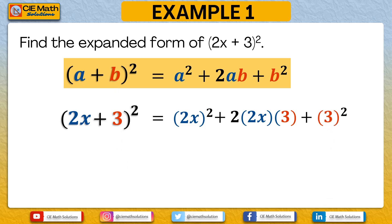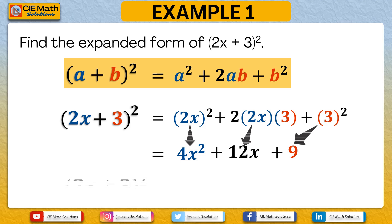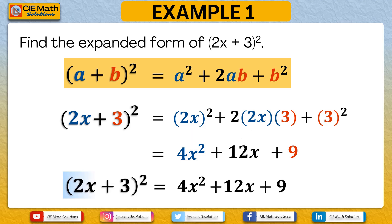Now let us simplify each term. Using the multiplication law of indices, 2x raised to 2 equals 4x squared. The second term, 2 times 2x times 3: 2 times 2x is 4x, times 3 gives us 12x. The last term, 3 squared, is equal to 9. Therefore, 2x plus 3 squared is equal to 4x squared plus 12x plus 9.